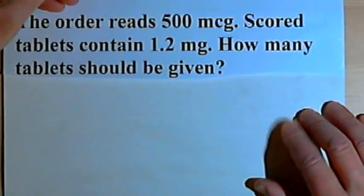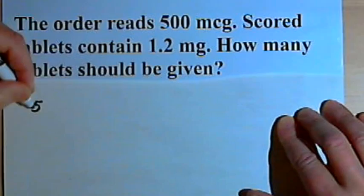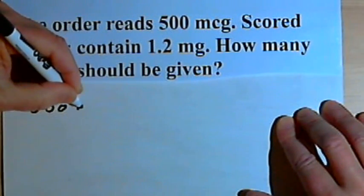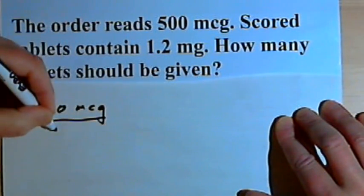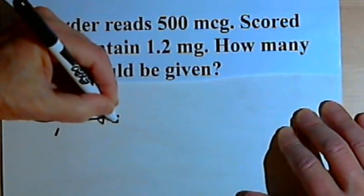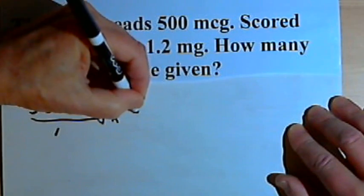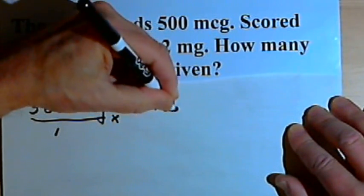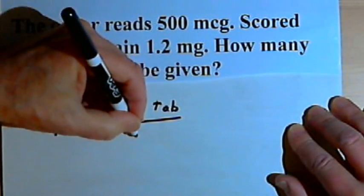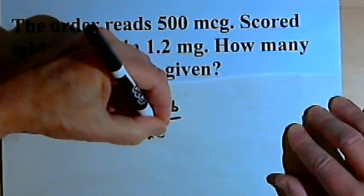So we'll set this up just like the last one. The amount ordered is 500 micrograms. I'll put that over 1, I'll multiply that by the fraction 1 tablet over 1.2 milligrams.